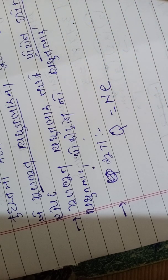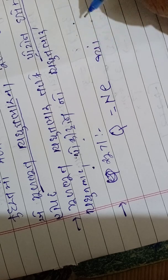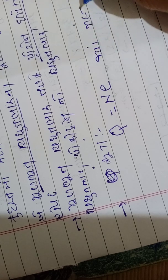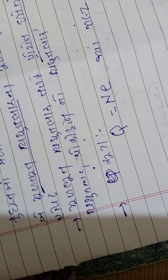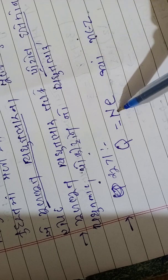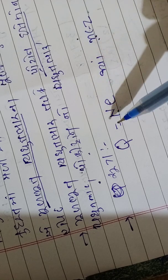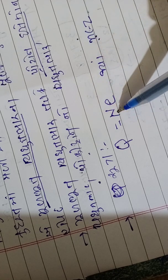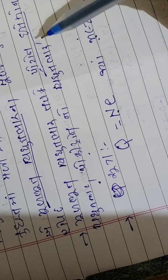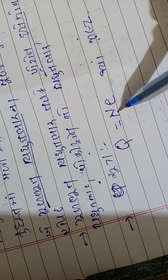q is equal to n, and n is equal to z. If the proton is equal to n, the positron is equal to n, and the electron is equal to n.